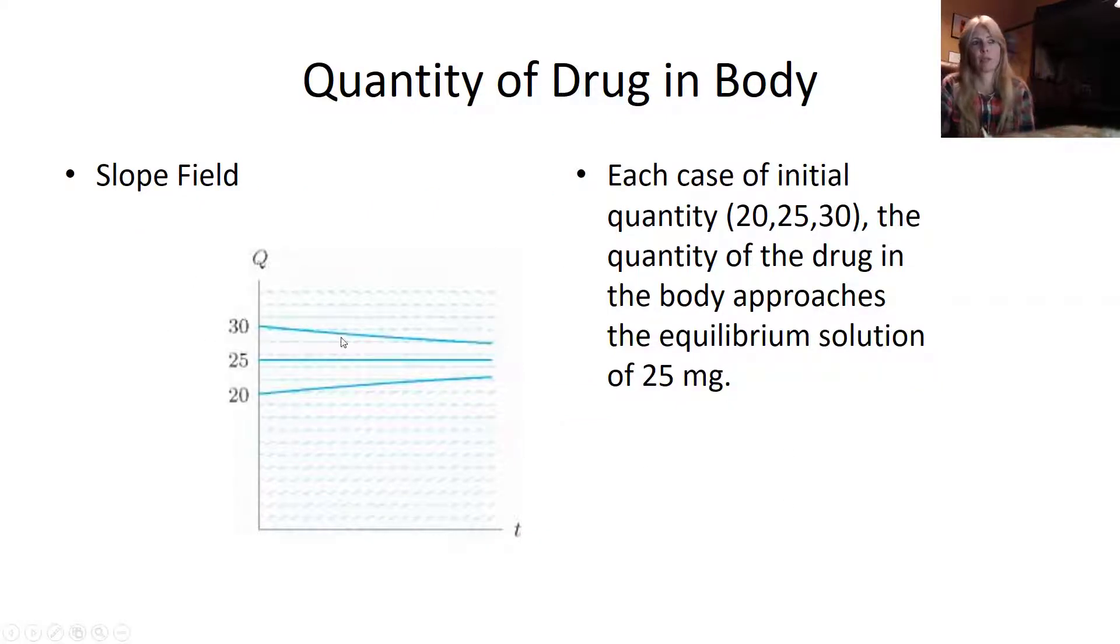Looking at this with a slope field, because remember these are my slopes for that differential equation, if I'm above that equilibrium value, this is going to come down, known as exponential decay. If I'm at the equilibrium, I'm fine. If I'm below it, then I'm going to come up to that equilibrium.